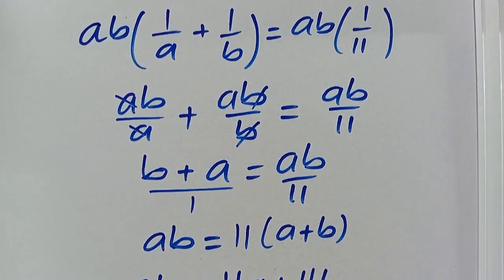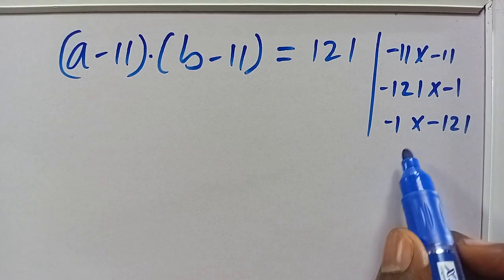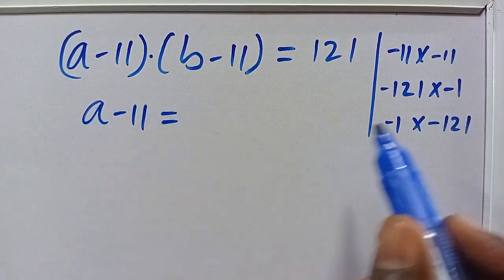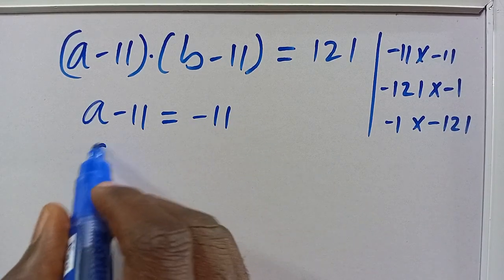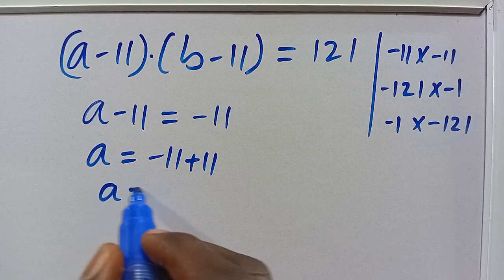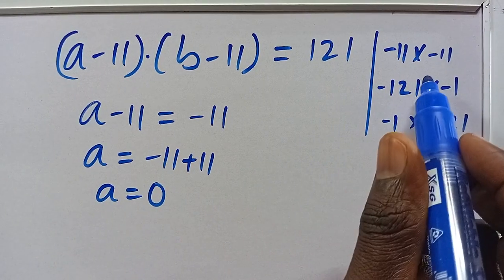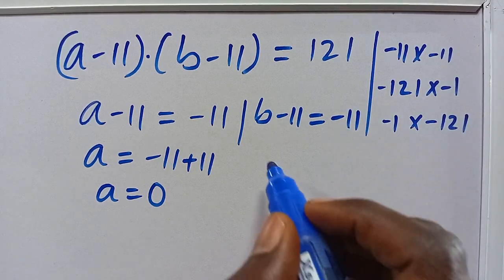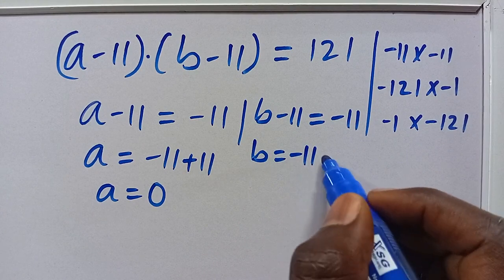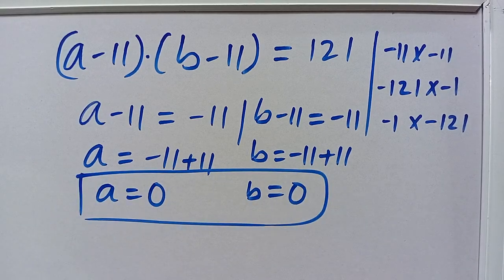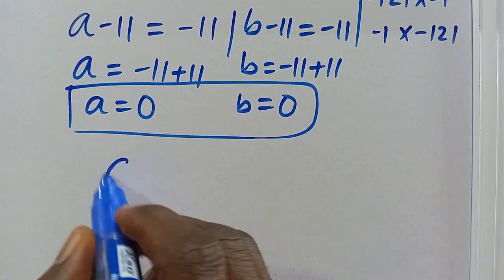Now for the negative solutions. In the case of the negative product, A minus 11 equals minus 11, so A equals 0. And B minus 11 equals minus 11 as well, so B equals minus 11 plus 11, giving B equals 0. That is another solution.